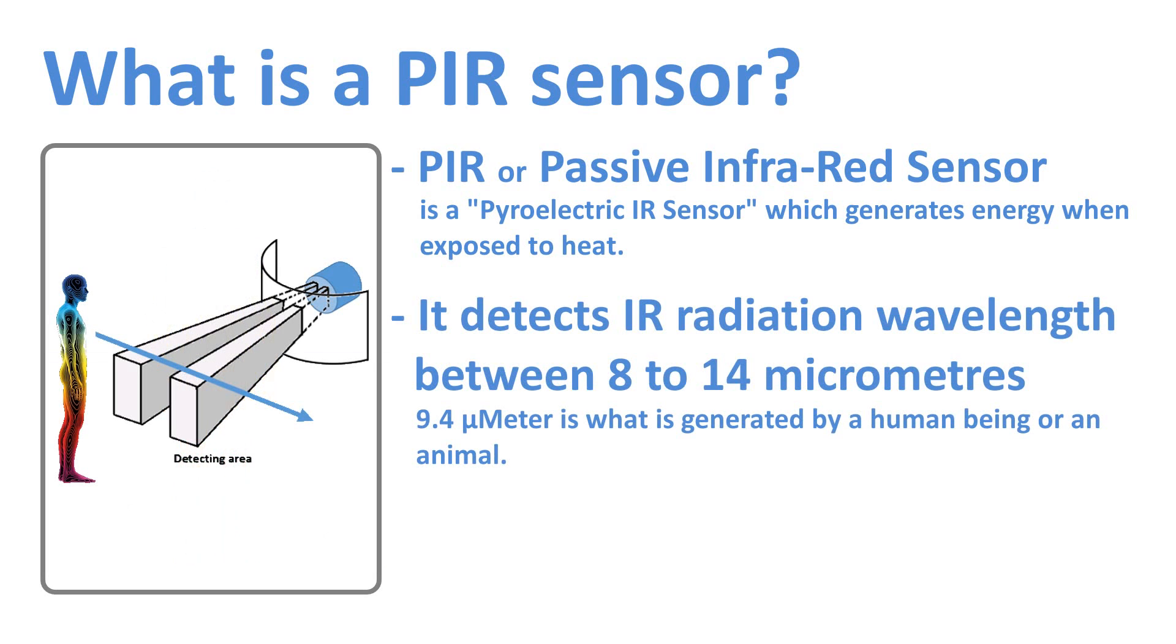When a human or animal with infrared radiation wavelength of 9.4 micrometers approaches the sensor, it detects the heat in the form of infrared radiation. The sensor only detects the energy emitted by other objects and doesn't produce any. That's why these sensors are called PIR, or passive infrared sensors.